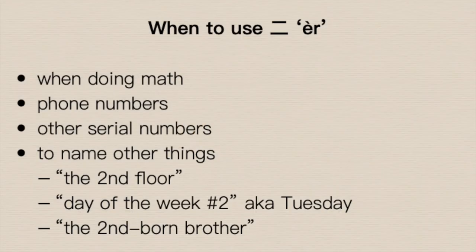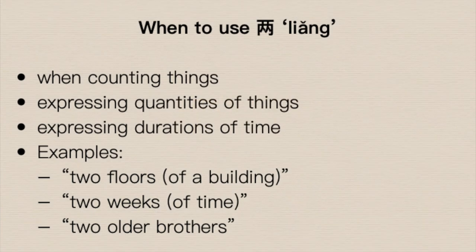Notice that 个 appears again here. When you know a measure word has to be part of the situation, that's a good clue you want to use 两 rather than 二. Quick recap: 二 refers to the name of the second number on the whole number line — the mathematical concept of two. It helps us name things like the second floor, the second day of the week, or the second brother in a family. 两 helps us count things — quantities, durations of time — like two floors of a building, two weeks of time, or two older brothers.